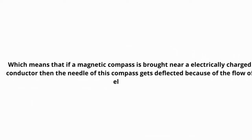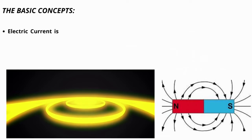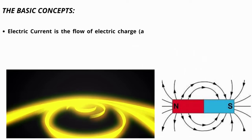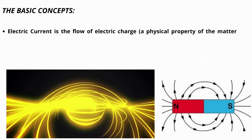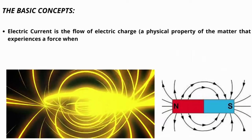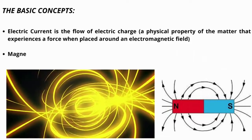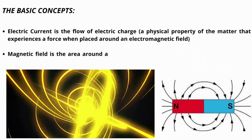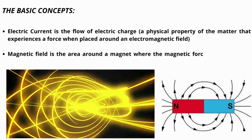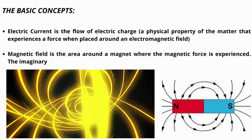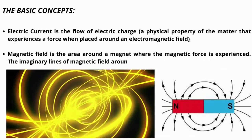Let's move on to the basic concepts and the summary of electric current. An electric current is the flow of electric charge. And magnetic field is the area around a magnet where the magnetic force is experienced. The imaginary lines of magnetic field around a magnet is called magnetic field lines.